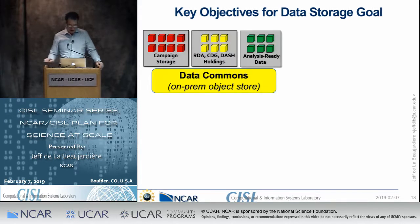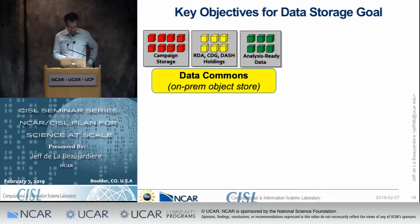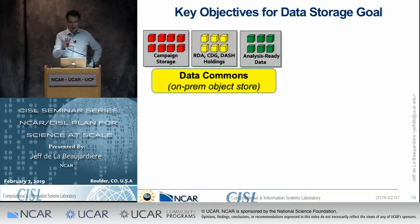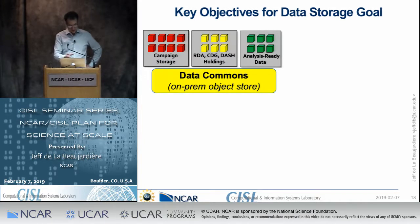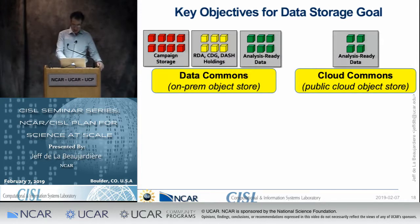The data storage goal's key objectives include purchasing and installing locally an object store — a different type of storage than we currently use. This could be an adjunct or even a replacement for campaign store someday. It could be a place where we put the RDA, the CDG, the Dash repository holdings, even the EOL and HAO data archive holdings, because those are data you don't necessarily need very high-performance access to — you just want to be sure they're accessible, safe, protected, and durable. Another objective is putting at least some data into a cloud commons — a public cloud object store — as an appropriate subset.